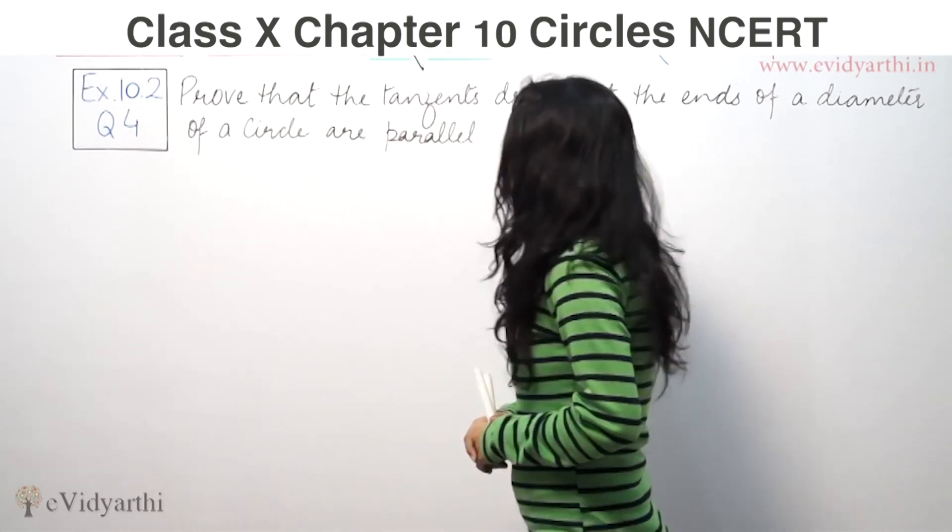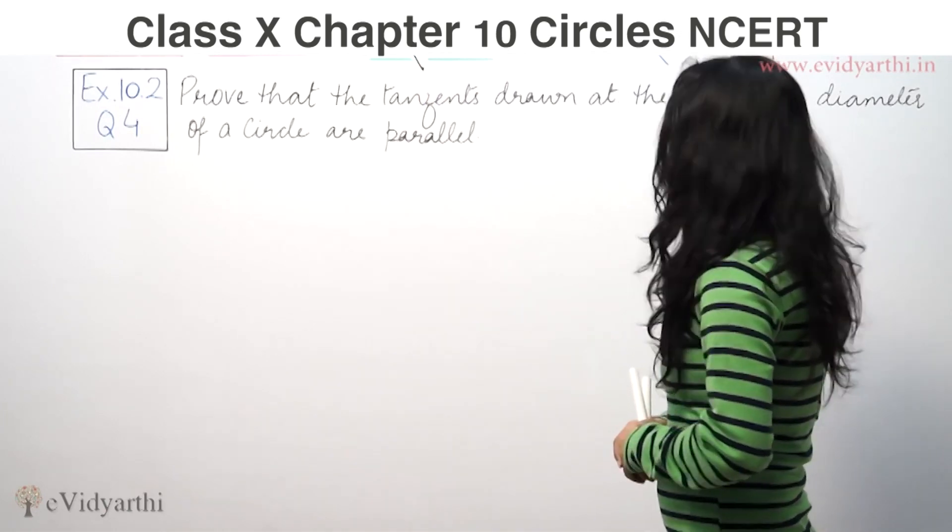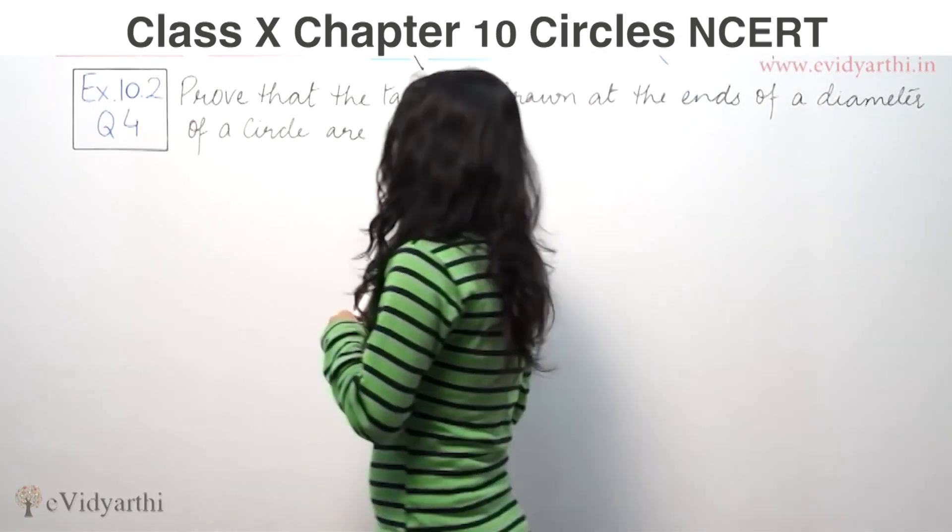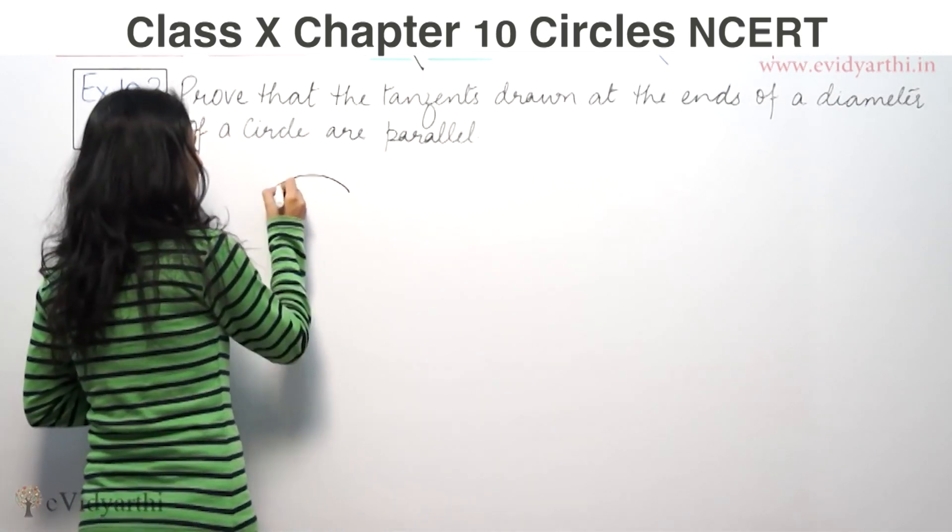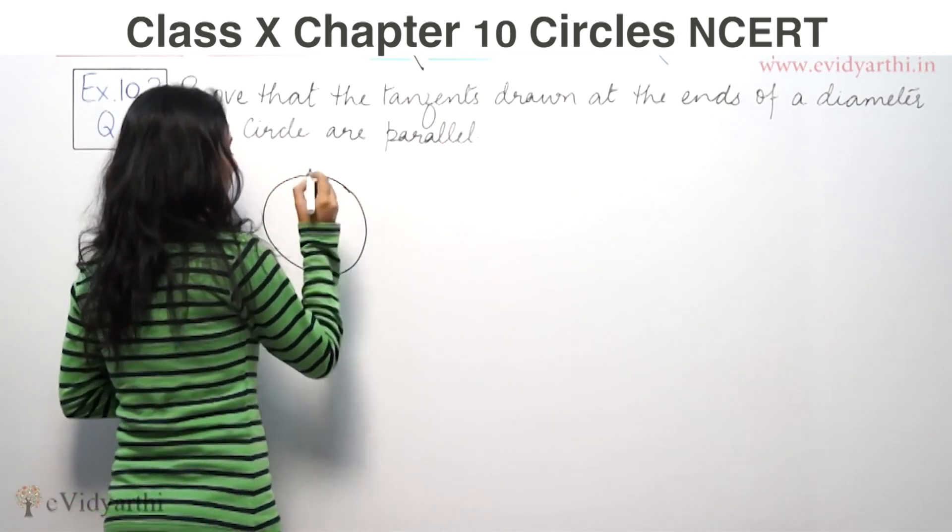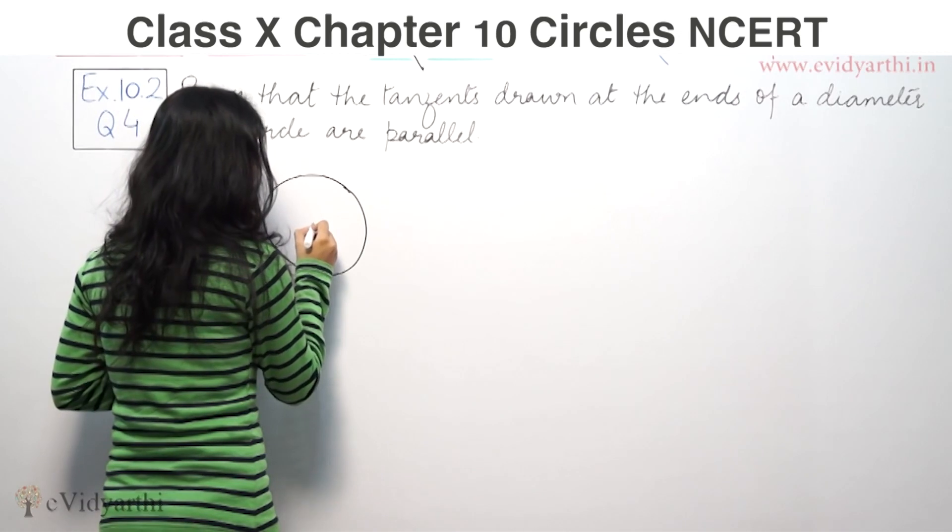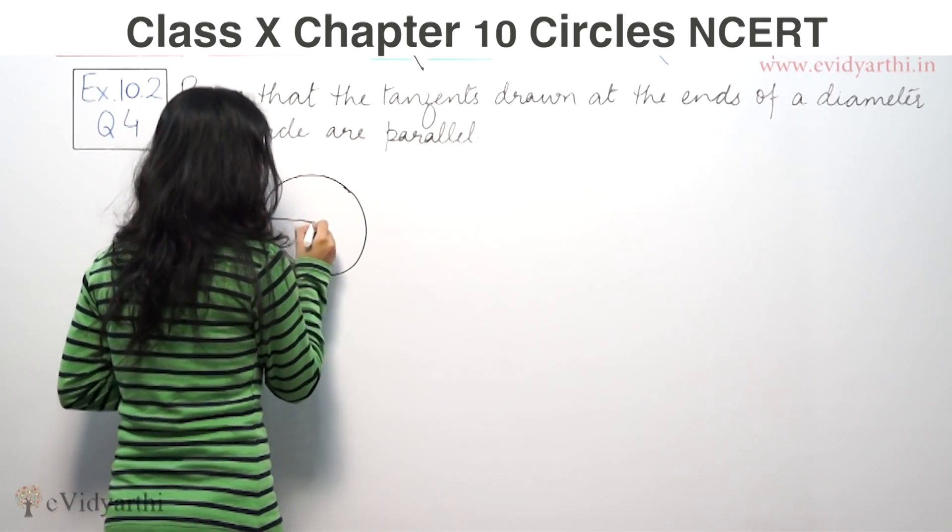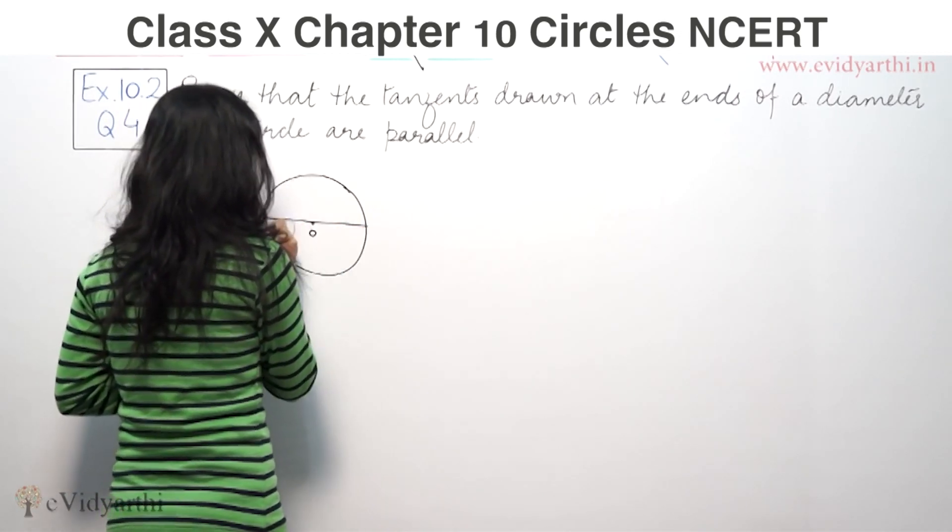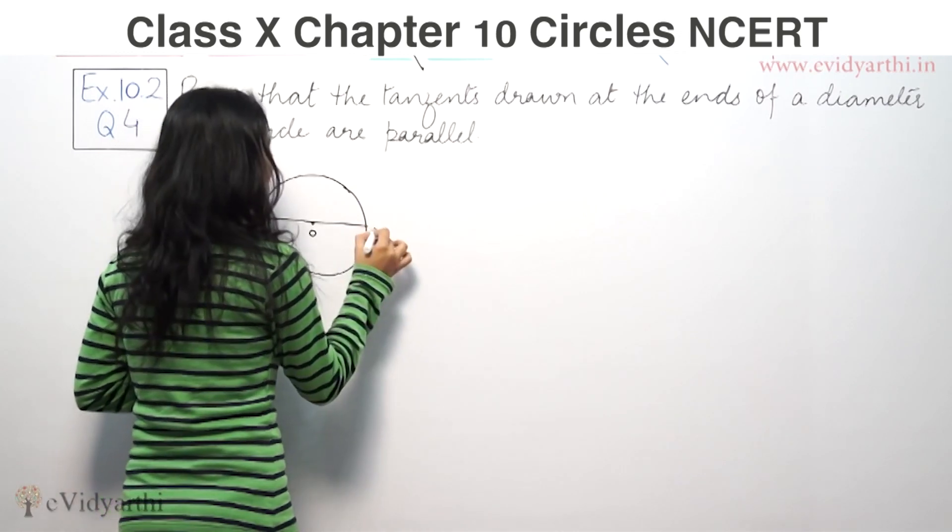This says prove that the tangents drawn at the ends of a diameter of a circle are parallel. So here I have a circle here. This is the center and this is the diameter I suppose. This is A, this is B.